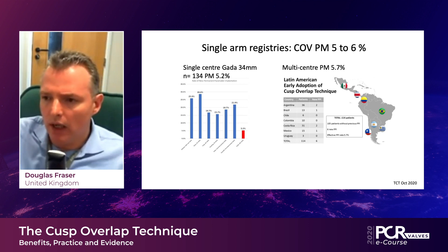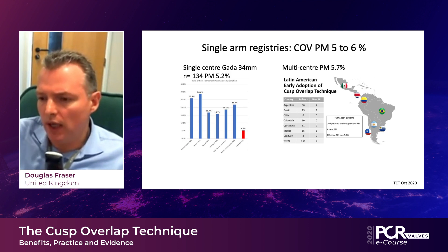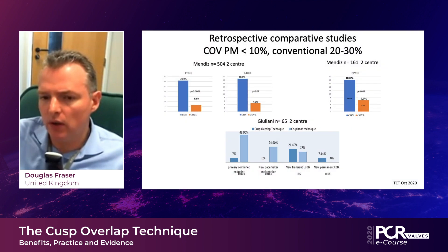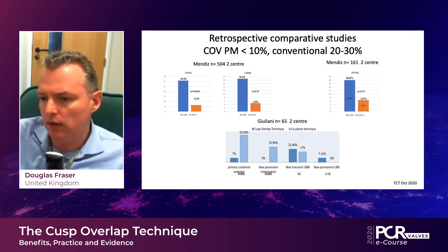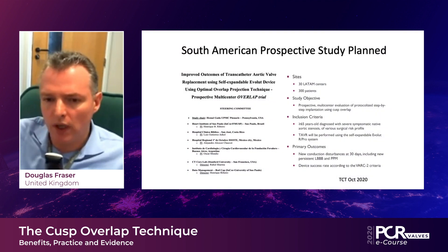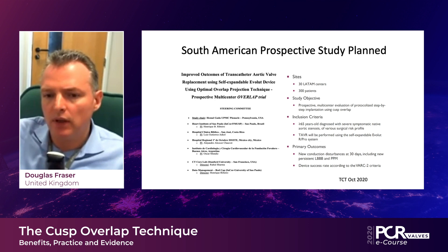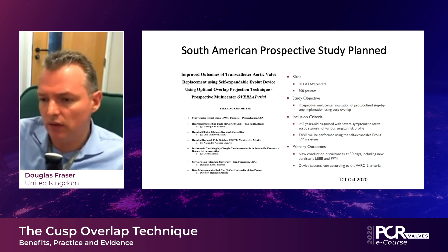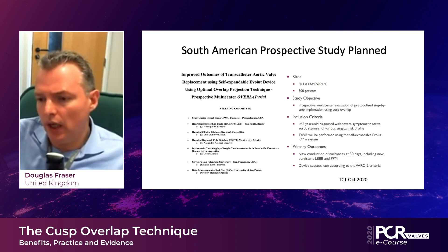Going on to other data presented at TCT, there are now a number of registries with several hundred patients in total, all showing the same sort of findings — between 4% and 7% pacemaker rates using the cusp overlap technique. Although this is somewhat preliminary registry data, mostly retrospective with one prospective study, involving multiple centers and several hundred patients, there is this consistent roughly 5% pacemaker rate — a considerable improvement on conventional data from well-controlled trials.